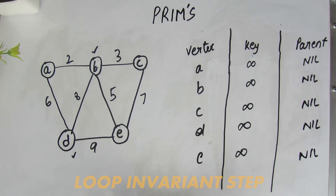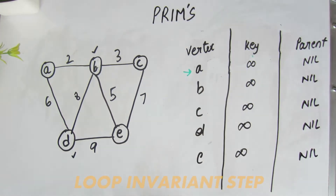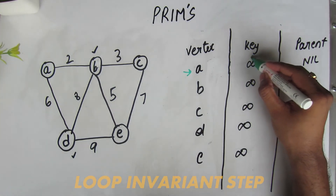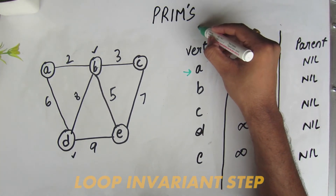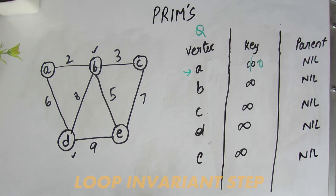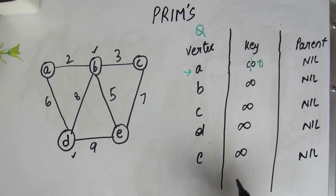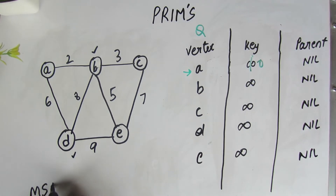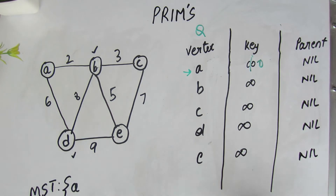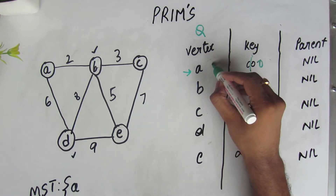As part of the loop invariant step, we need to consider the root of our minimum spanning tree. Conventionally we will consider A as our root and update its key value to zero, because the cost of reaching the root is always zero. Now we loop through the queue Q — which is our heap — to find the minimum spanning tree. The first step is to extract the minimum based on the key value; that is only A, so A is extracted and added to the minimum spanning tree candidate set.